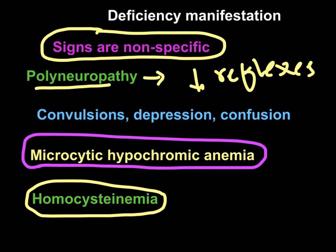Patients with B6 deficiency can have homocystinemia, because cystathionine beta-synthase — which needs pyridoxal phosphate as a coenzyme — has decreased activity. This reduces conversion of homocysteine into cystathionine, elevating homocysteine in the blood. Elevated homocysteine interferes with collagen in blood vessels, leading to accelerated atherogenesis, thrombosis, and increased risk of myocardial infarction and other cardiovascular events.